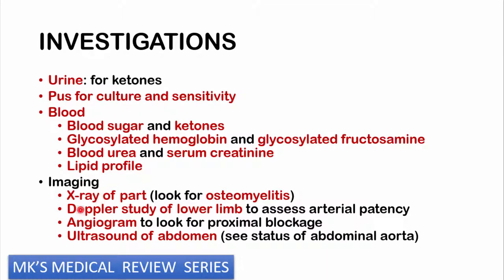For imaging, order an X-ray to look for signs of osteomyelitis — subtle in the acute phase, with periosteal reactions or elevation. If osteomyelitis is suspected, order more sensitive tests such as a bone scan or MRI, which picks up early changes. In chronic osteomyelitis, look for involucrum and sequestrum — the new bone and dead bone respectively. Also order a Doppler study to assess vessel patency, an angiogram for proximal blockage, abdominal ultrasound for the aorta, and an ECG or echo if the patient is going to theater.